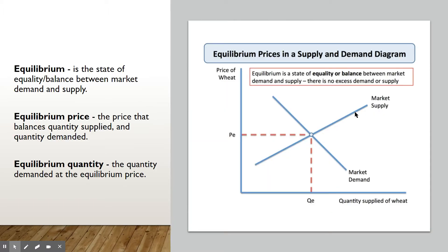This is what the normal market looks like when it's in a state of equilibrium. If it's out of equilibrium, it's got two states it can be in. If it's above the equilibrium price, that is called a surplus. And if it's below the equilibrium price, that is called a shortage. Both are bad things and they have different effects.